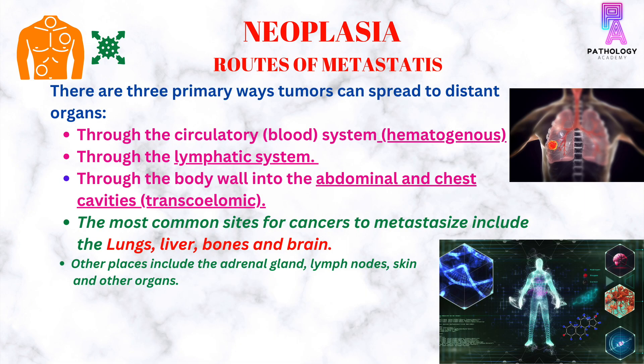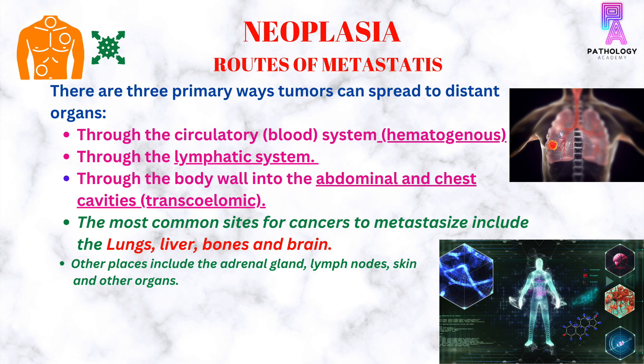There are three primary ways tumors can spread to distant organs: through the circulatory or blood system (hematogenous spread), through the lymphatic system, and through the body wall into the abdominal and chest cavities (also known as trans-coelomic metastasis). The most common sites for cancer to metastasize include lungs, liver, bones, and brain. Other places include the adrenal gland, lymph nodes, skin, and other organs.